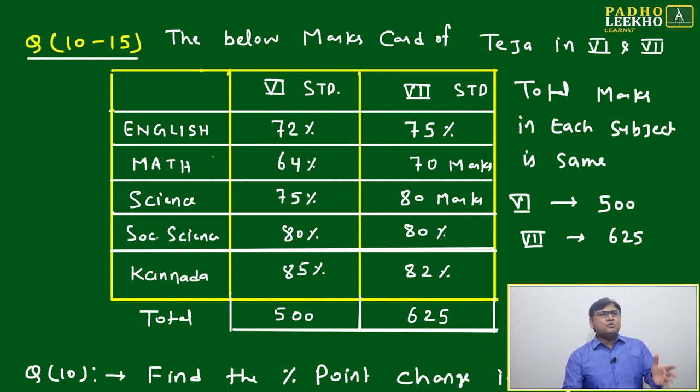This question gives some tabular data. The table shows the marks card of Teja in 6th and 7th standard. Earlier she appeared for 6th and got these marks. Next year she appeared for 7th and got these marks. Some differences are there.